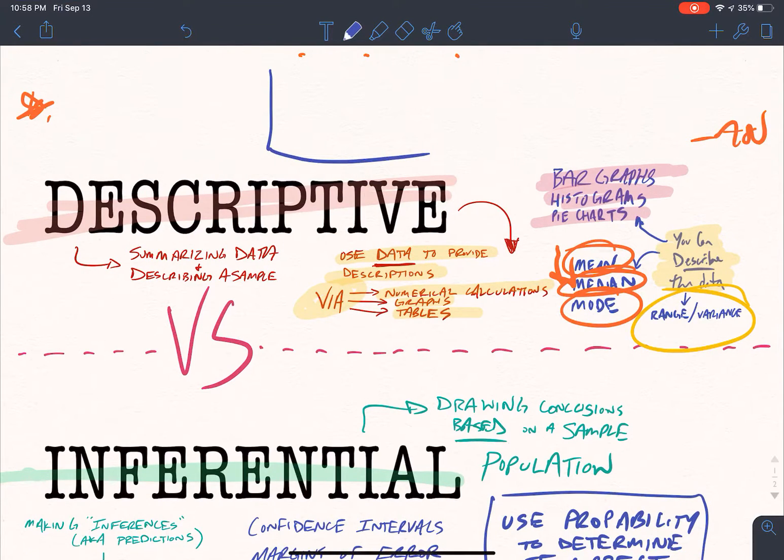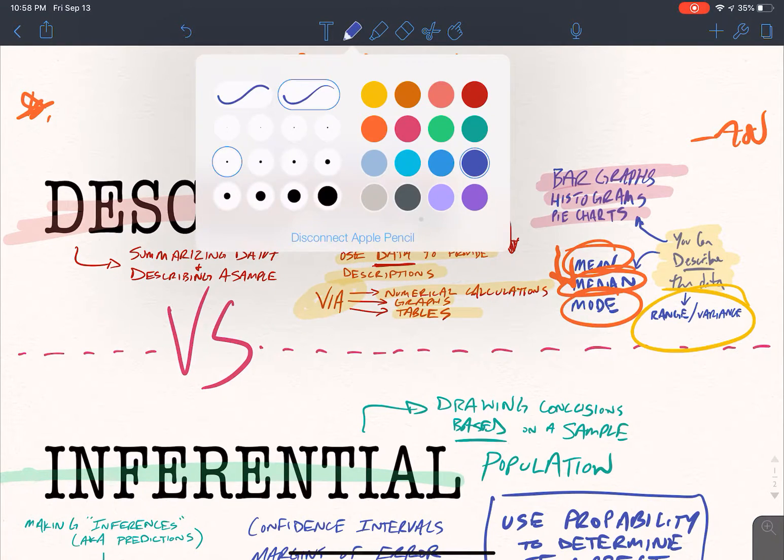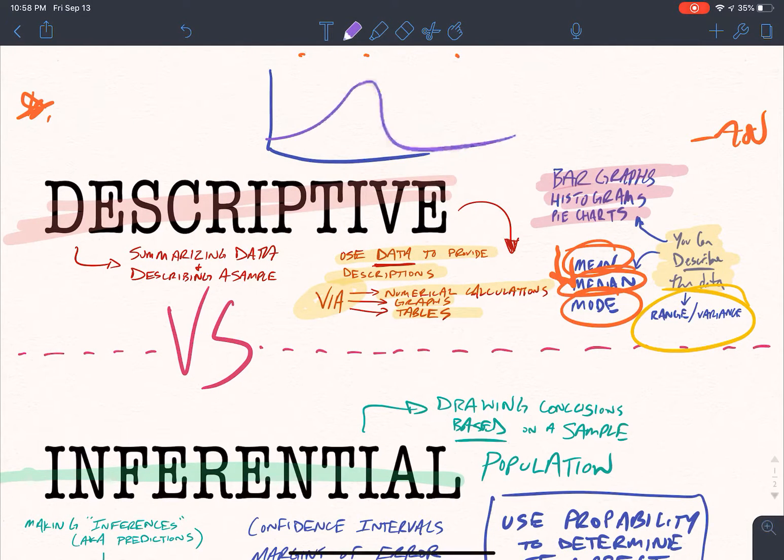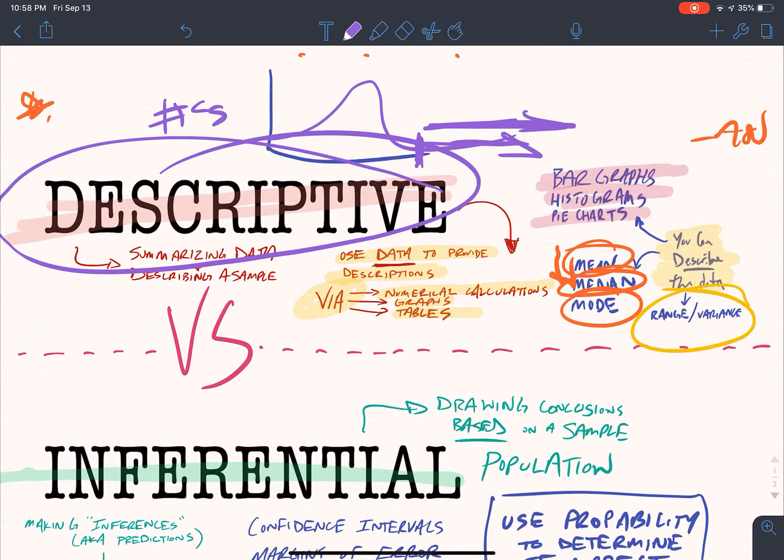And let's say the graph went something like this. You could even say like, after this point right here, it decreases and never goes up. You are just still describing it, even though it's not like giving specific numbers, that's okay. You're still describing what you're looking at. And that would fall under descriptive statistics. Okay.